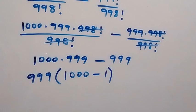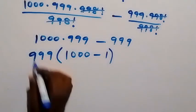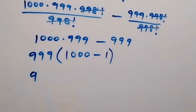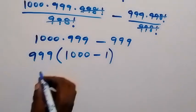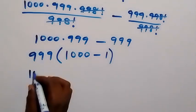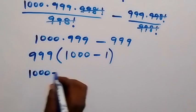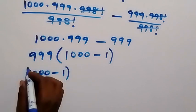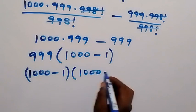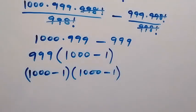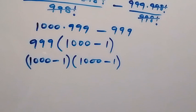In the same way, we can decide to write this 999 as 1000 minus 1 as well. So 1000 minus 1, that's the same thing as 999. So we have 1000 minus 1, now then multiply by 1000 minus 1.